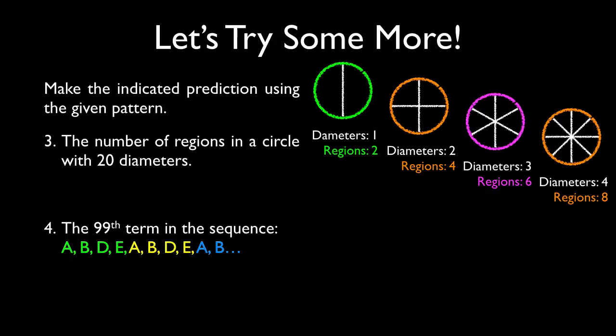So the pattern is quite simple after seeing that. 1 times 2 is 2, 2 times 2 is 4, 3 times 2 is 6, and 4 times 2 is 8. So therefore, if we take our 20 diameters and multiply it by 2, it tells us that we'll have 40 regions. So inductive reasoning can be used by looking at patterns and making predictions down the road.